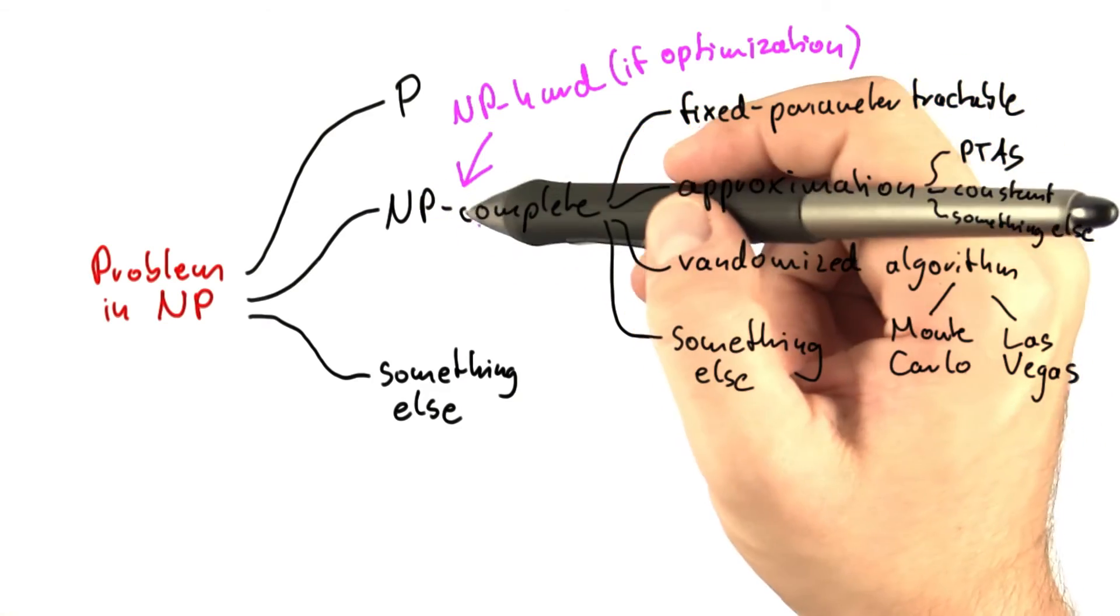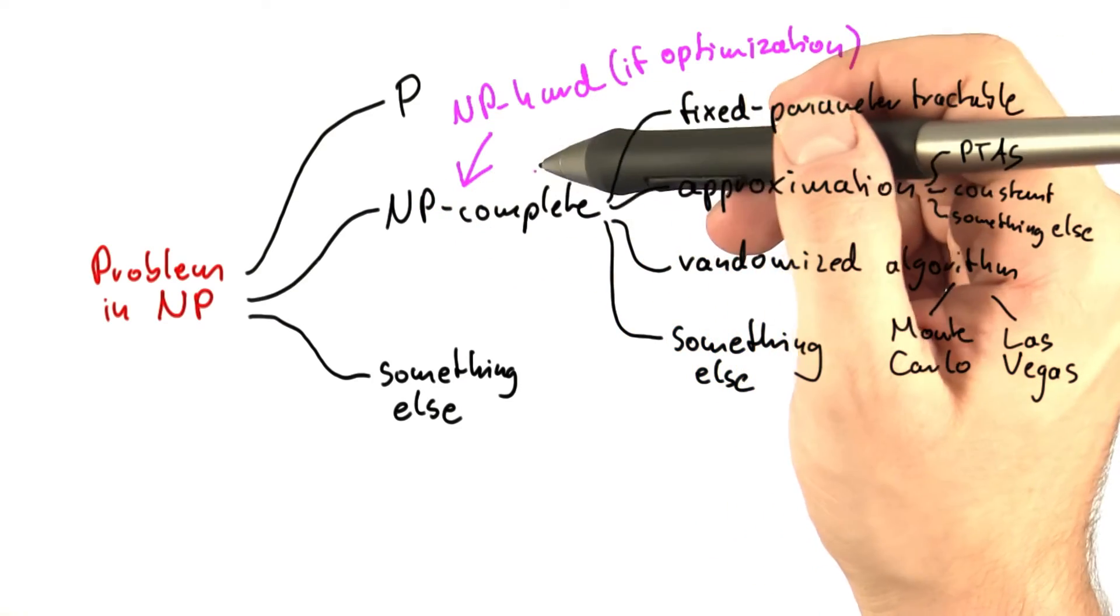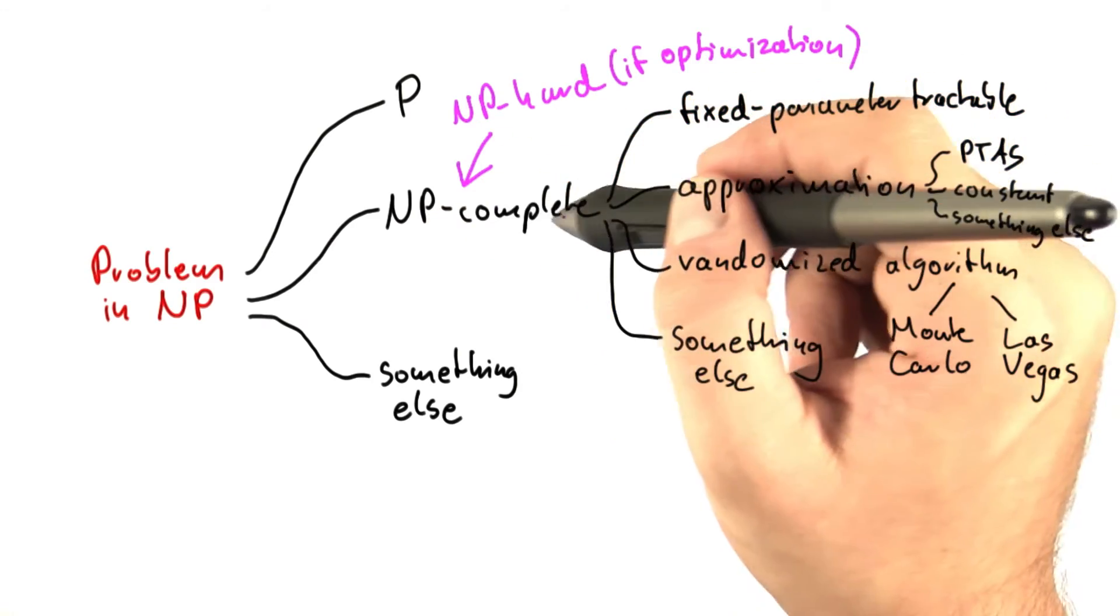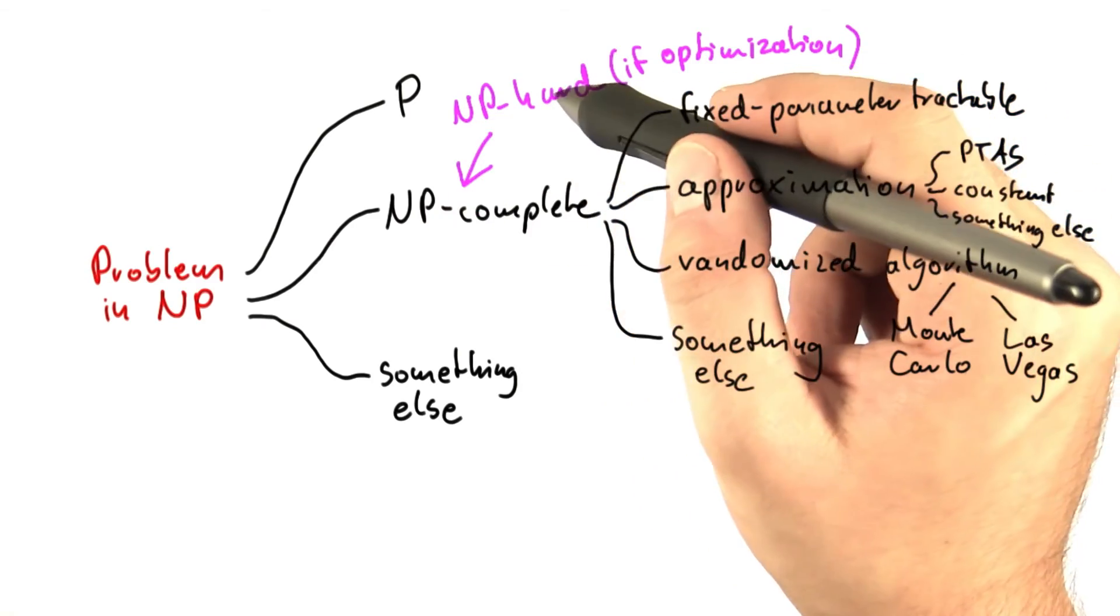But many people use these terms interchangeably. And actually, when you're working in practice on hard problems, it doesn't really make much of a difference, at least in my opinion. But it's not the most precise way to say it. So, decision problems NP complete, optimization problems NP hard.